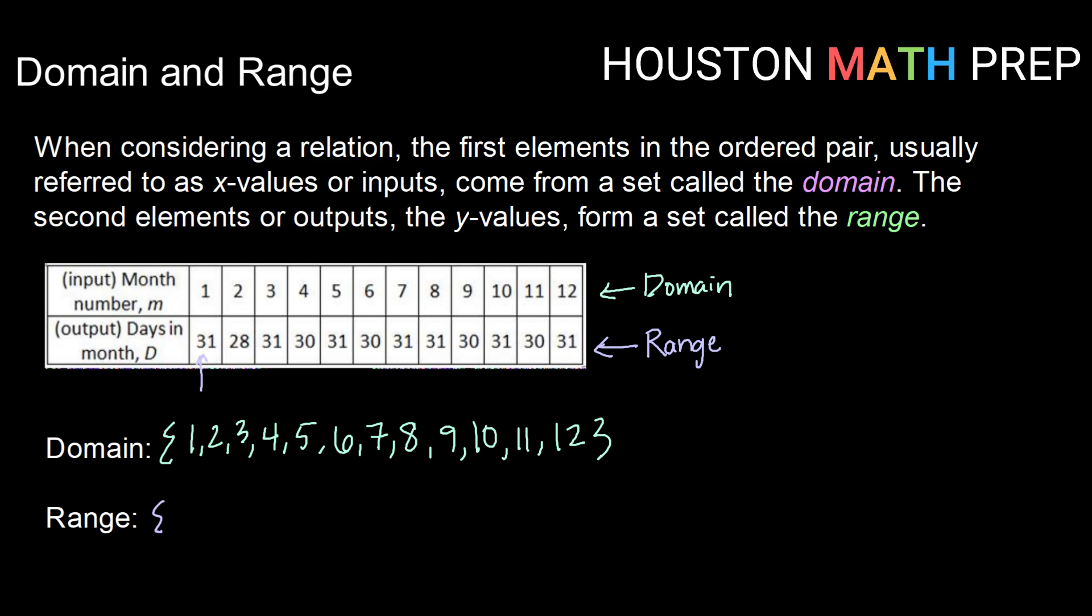So I'm going to take and check just going in order. When I get a value that I don't have listed, I'm going to go ahead and list it. So for January, I have 31. February, 28. I don't have that one yet, so I'll go ahead and list it. March has 31 days. I already have 31, so I'm going to move to the next one. April has 30 days. I don't have that one listed, so I'm going to go ahead and list it.